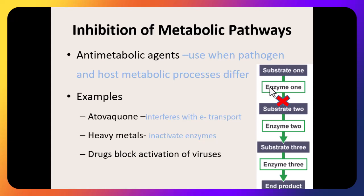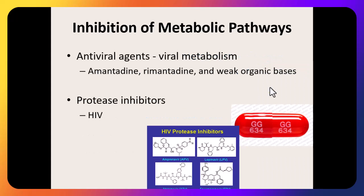We must look for metabolic pathways and enzymes unique to bacteria and not found in our cells. Examples: ubiquinone interferes with electron transport; heavy metals are antimicrobial because they inactivate enzymes, though high doses can inactivate our enzymes too. Some drugs block activation pathways that viruses need to begin reproducing — if a virus can't become active, it won't replicate. Examples include amantadine and rimantadine.